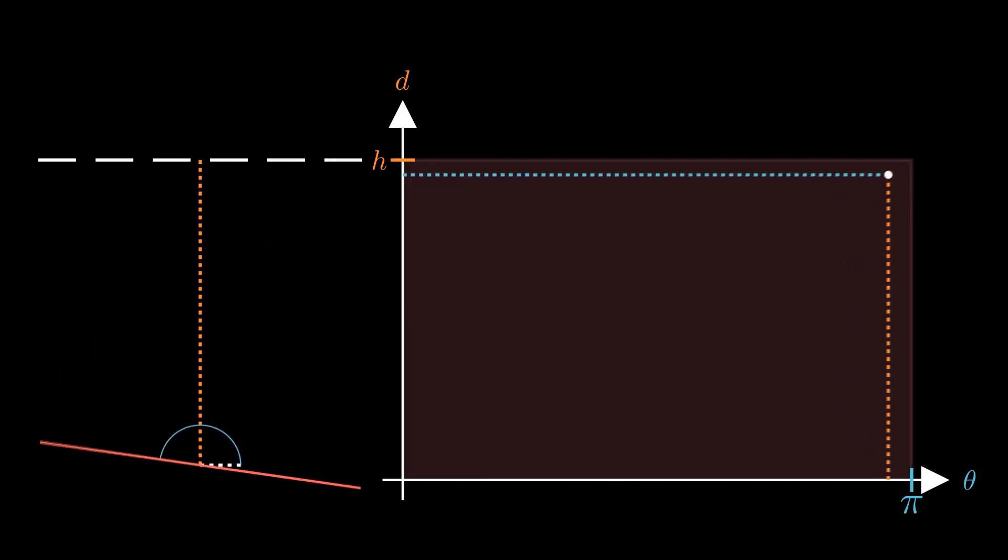This outcome can be visualized on a set of axes, where the vertical axis represents d. Remember, d is a value between 0 and h. The horizontal axis will represent theta, where theta is a value between 0 and pi. This rectangle represents all the possible combinations of d and theta.